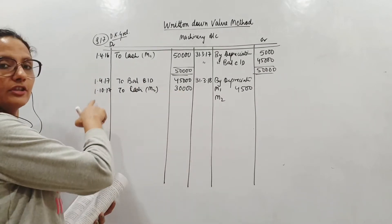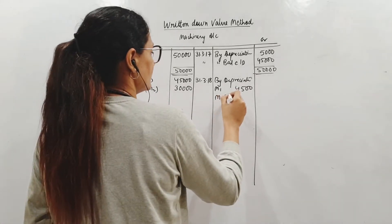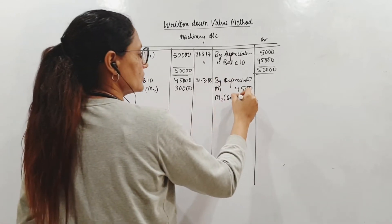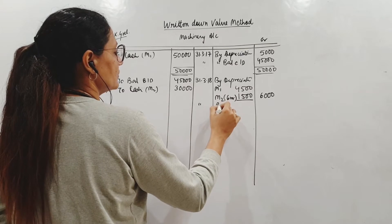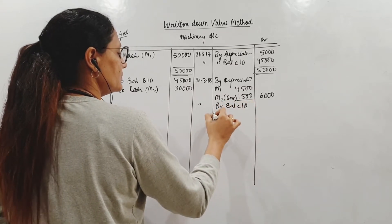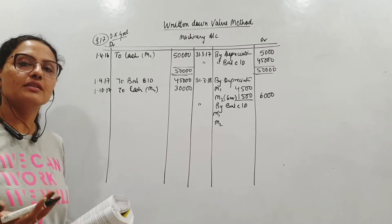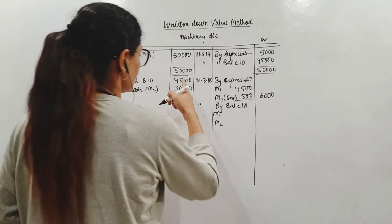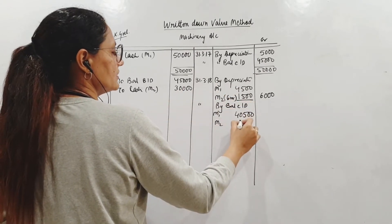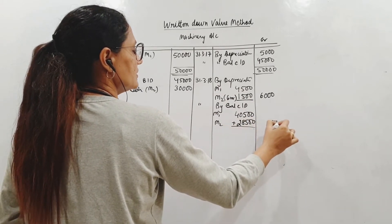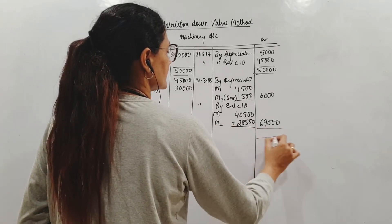I don't think there is any other transaction here. So 31st March 18 we will simply pass the entry for depreciation. Now we have 2 machines, M1 and M2. M1 written down value here is 45,000. It will be 10% because that is being used for the full year, 4,500. And this one, the second machine, we are not using for the full year. We have started using it from 1st of October. So October, November, December, January, February, March is 6 months. So 1,500 will be for the part of the year. So 6,000 will be the total depreciation for this year.